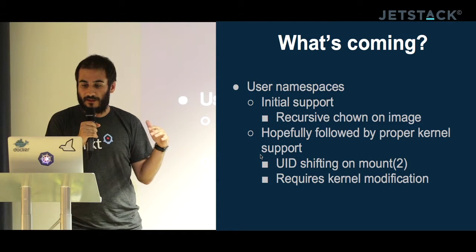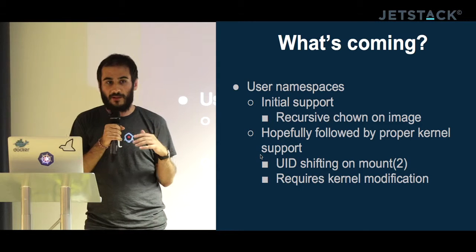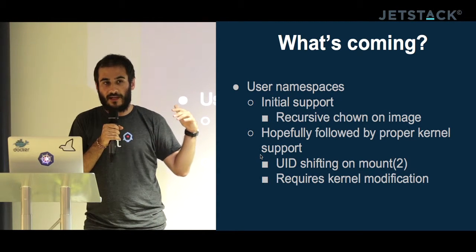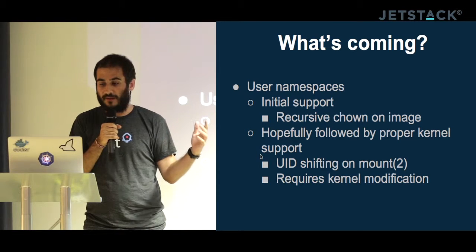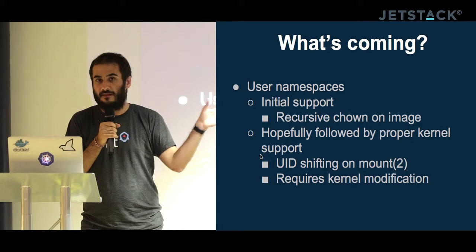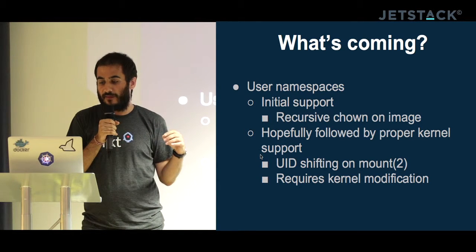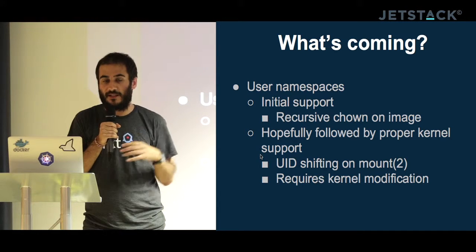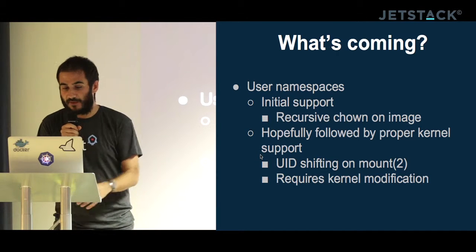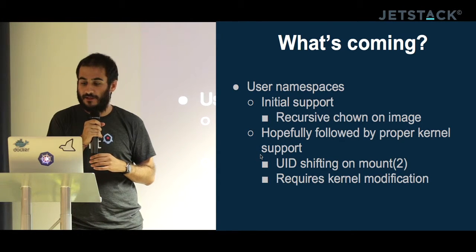That's not ideal, so after this initial implementation we'll try to get proper kernel support. The idea is that every time you mount a filesystem, you can say you want to shift the UIDs by, say, 10,000. Then you'll have proper user namespace support and can take advantage of copy-on-write technologies. It requires a kernel modification so it will take a while, but we'll work toward that.